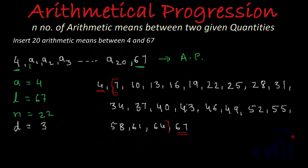Here we have inserted only 20 arithmetic means, but we can actually insert any number of arithmetic means between any two given numbers. This is the method of finding arithmetic means between any two given numbers. In the next video I will be writing the general formula to find n number of arithmetic means between any two given numbers. Keep watching MathSmart and subscribe to keep updated about new editions.